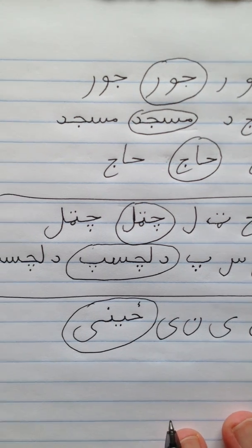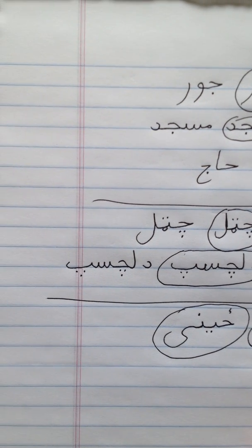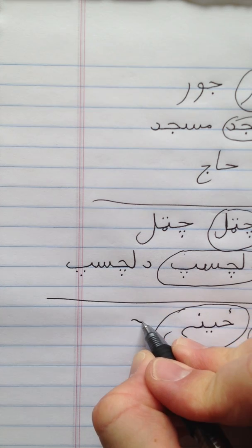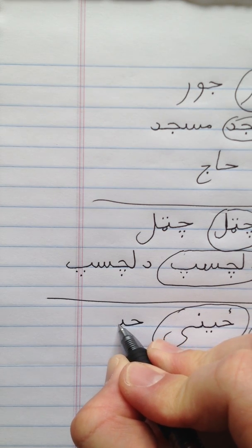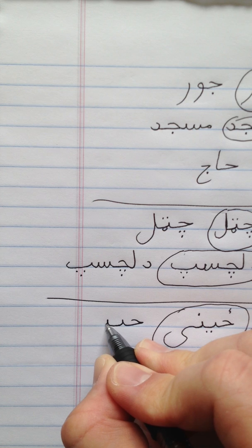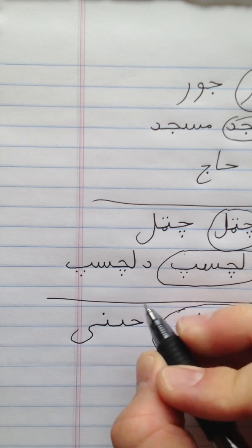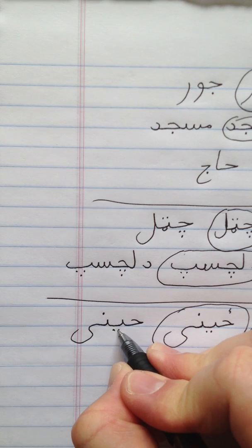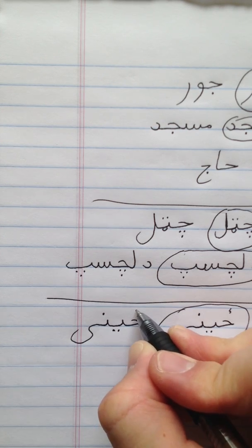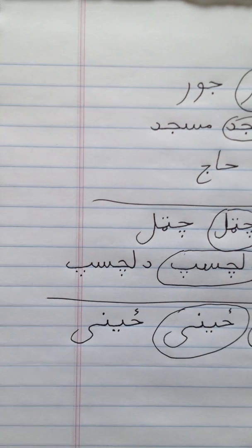Let's do that one one more time. ZE, YA, NUN, YA. NUN gets one dot, YA gets two dots, and ZE gets the backward Z. ZENA.